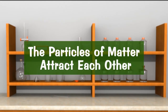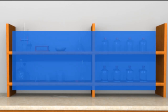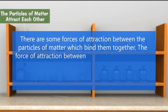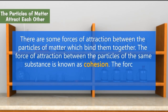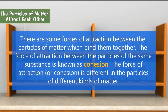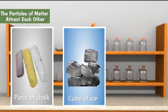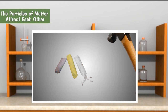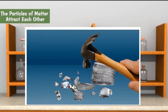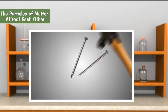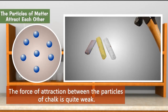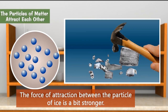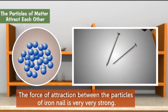The particles of matter attract each other. There are forces of attraction between the particles of matter which bind them together. The force of attraction between the particles of the same substance is known as cohesion. The force of attraction is different in the particles of different kinds of matter. If we take a piece of chalk, a cube of ice and an iron nail and beat them with a hammer, it is very easy to break the chalk. It requires more force to break a cube of ice, whereas the iron nail does not break at all even with a large force. The force of attraction between particles of chalk is quite weak, stronger in ice, and very very strong in iron.